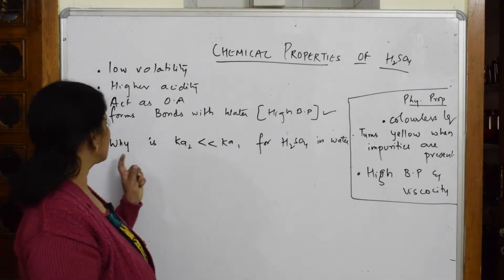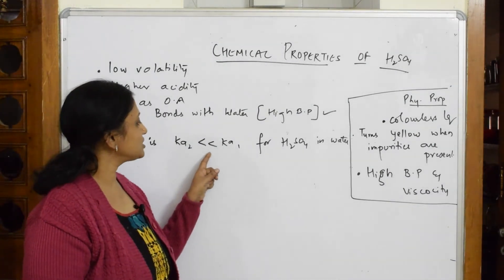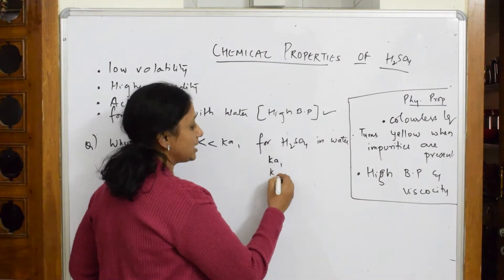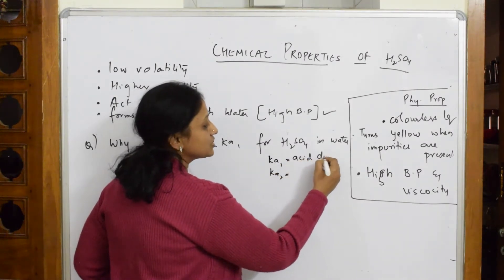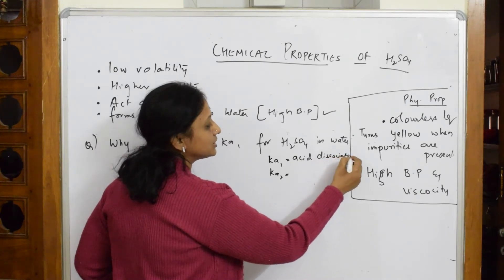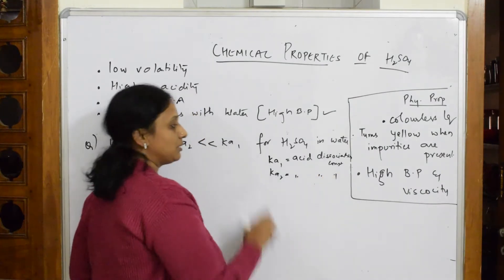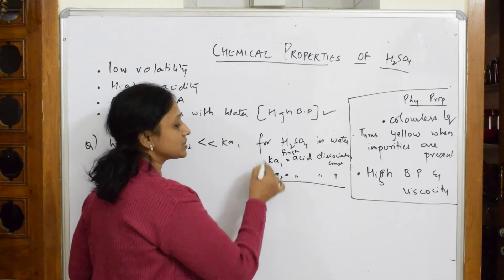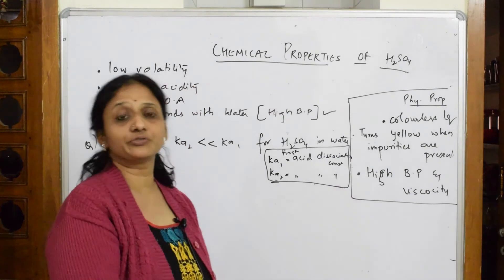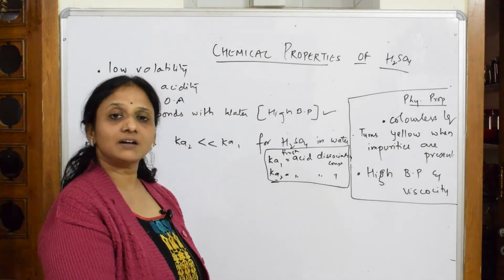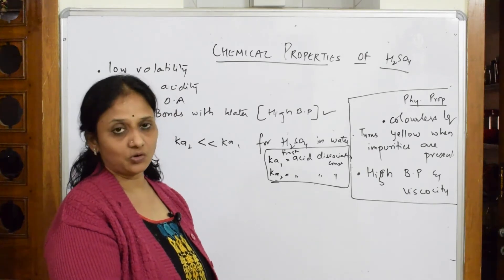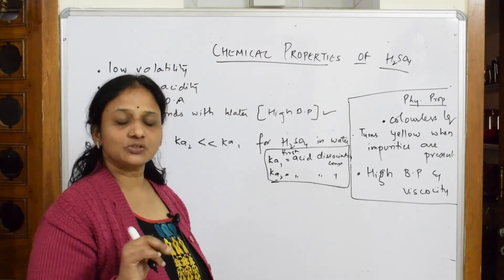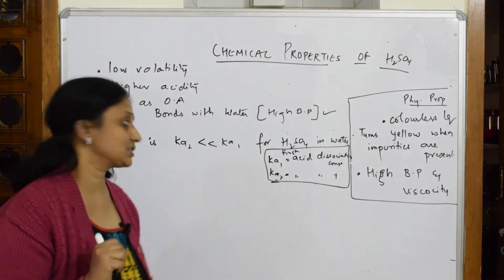Why is Ka2 very much lesser than Ka1 for H2SO4? Ka1 and Ka2 are called acid dissociation constants. This is the first acid dissociation constant and this is the second acid dissociation constant. This determines the strength of the particular acid. Higher the Ka value or lower the pKa value, the stronger the acid.